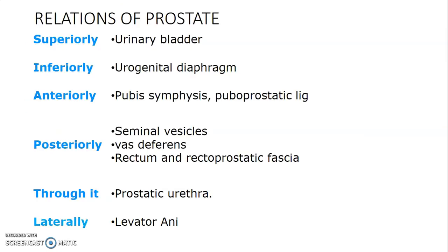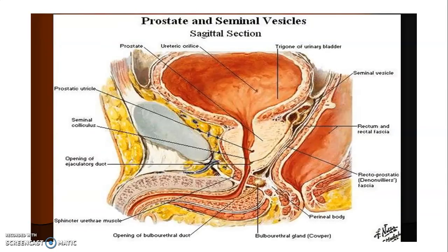The prostate has different surfaces: a posterior surface, anterior surface, and an inferior lateral surface. Its apex faces downwards while the base faces upwards. The prostate has different relations. Superior to it is the urinary bladder. Inferior to it is the urogenital diaphragm. Anterior to the prostate is the pubic symphysis and the puboprostatic ligament, while posterior to the prostate lies the seminal vesicles, vas deferens, the rectum, and the rectoprostatic or Denonvilliers' fascia.